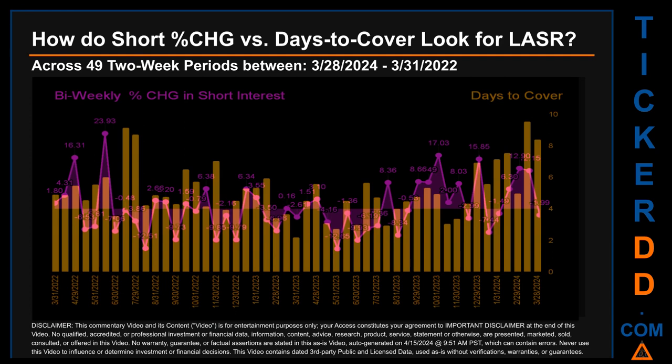Other interesting data points: the largest percentage increase in short interest was 23.93%, occurring once on June 15, 2022 settlement date. The largest percentage decrease in short interest found across those 49 two-week snapshots was minus 12.65%, occurring once on May 31, 2023 settlement date. The average days to cover was about 5.09. The biggest days to cover was 9.54, and it happened once on March 15, 2024 settlement date.